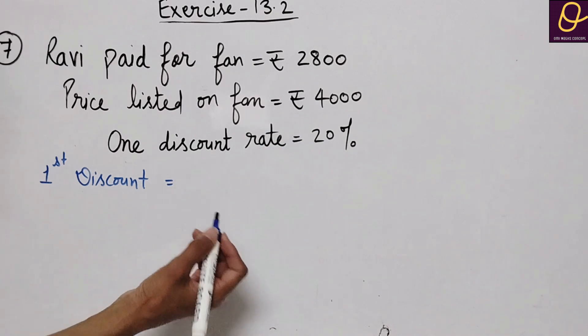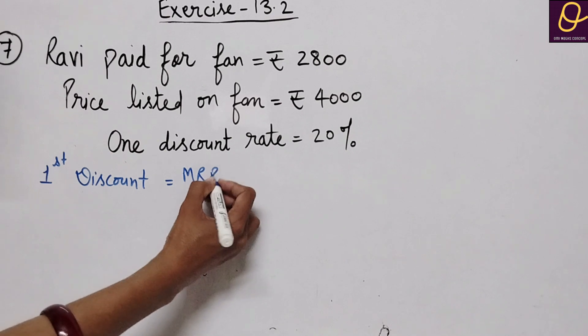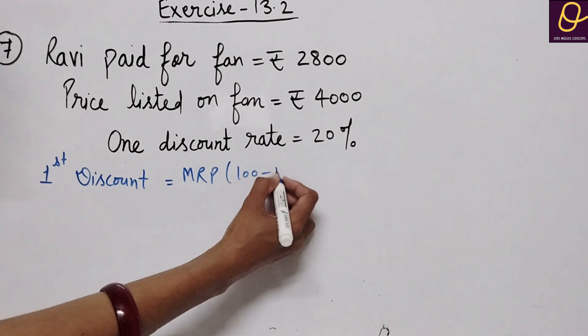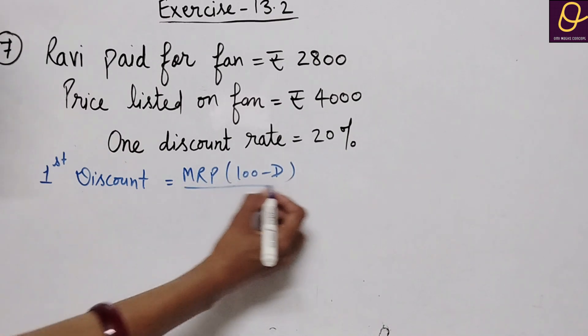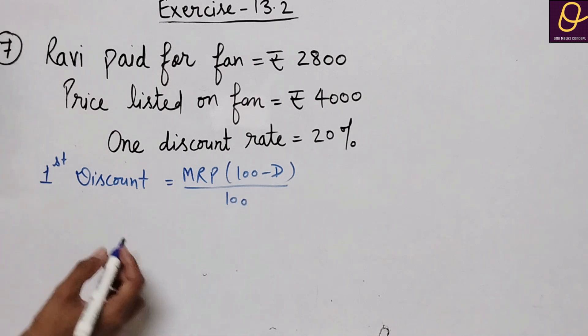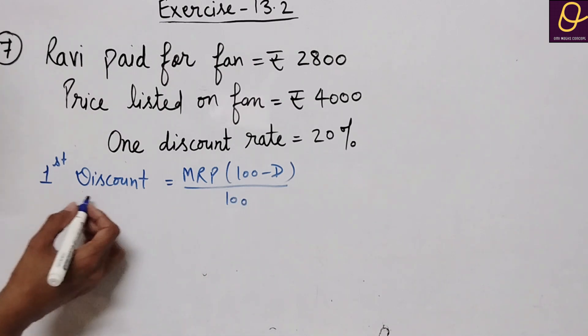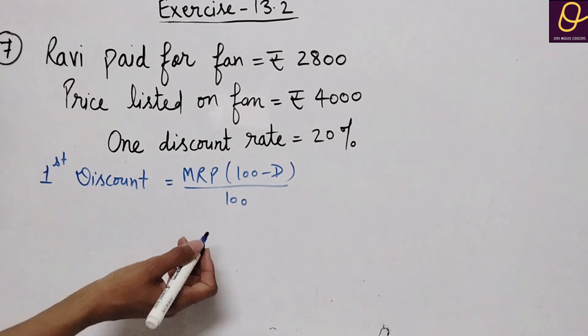The formula is 100 minus discount divided by 100, and you can find out the price after first discount.